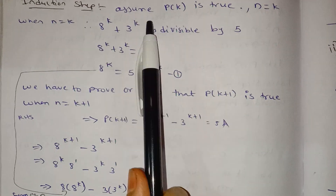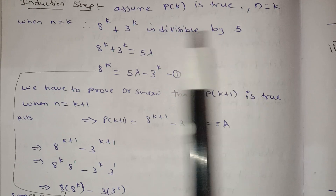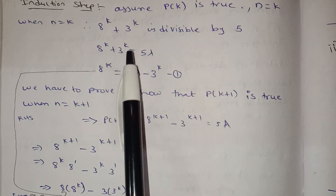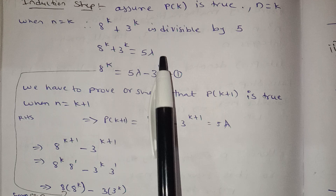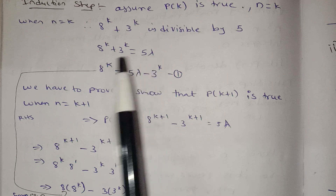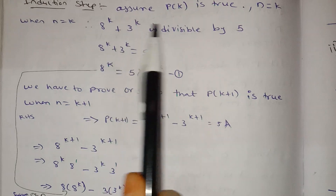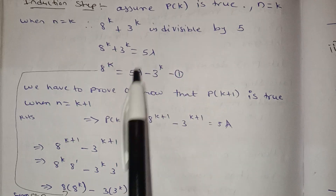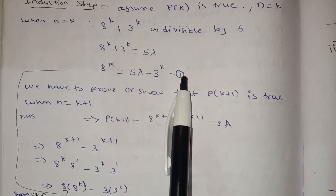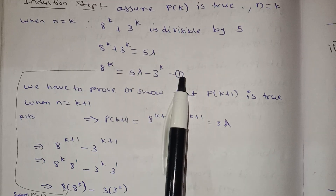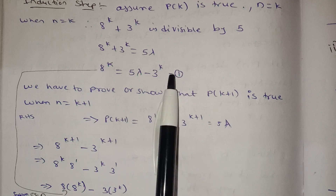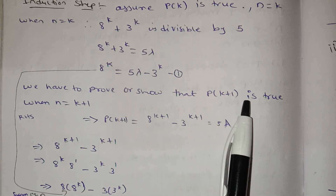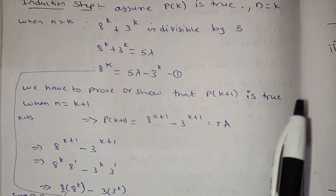8 power k minus 3 power k is divisible by 5. So we can say 8 power k minus 3 power k is equal to 5 lambda. We have to prove or show that P of k plus 1 is true.